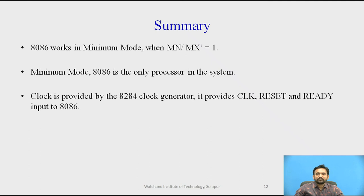Now we are coming to the summary part. 8086 works in minimum mode when MN/MX equals 1. Minimum mode 8086 is the only processor in this system. Clock is provided by the 8284 clock generator. It provides clock, reset, and ready input to 8086.